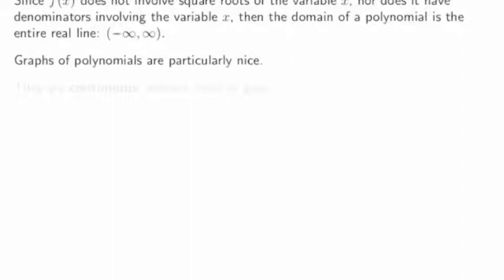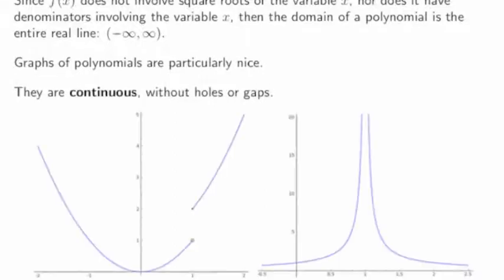Graphs of polynomials are particularly nice. They're continuous, without holes or gaps. For example, if we look at these graphs, the one on the left has a hole or jump discontinuity where x is 1. The one on the right is not defined where x is 1. In neither of these graphs is the function continuous, so these could not be the graphs of polynomials.